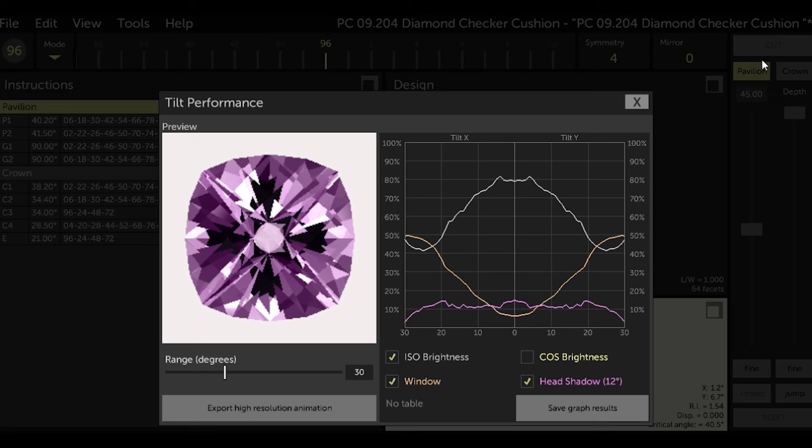I normally just look at the face up or zero degree tilt, and that's simulating if you were outside in the sunlight looking directly down at the top of the gemstone. In this case, GCS is predicting about 80% brightness, which is very good, and about a 5% window, which again is very good.